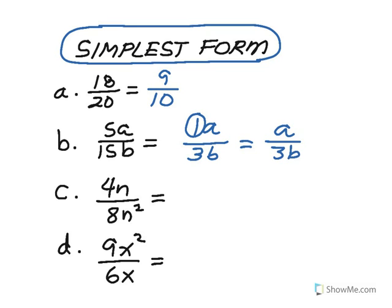For part C, 4N over 8N squared. The 4 over 8 is going to simplify to a 1 over 2. And then the N over N squared, this is really N times N in the denominator, and this is a single power of N in the numerator. We know that anything divided by itself is 1, so that cancels to a 1. And I'm going to leave now that 1 in the numerator, because I don't have any other variable and I can't leave a blank. So I have a 1 in the numerator and a 2N in the denominator.